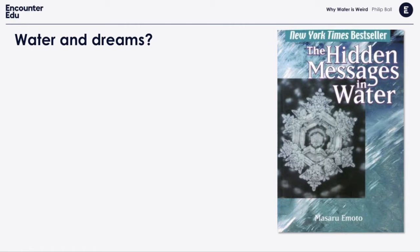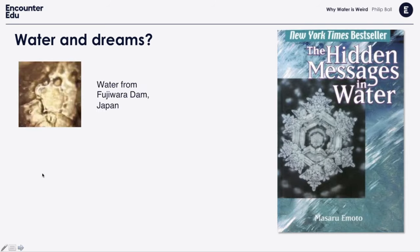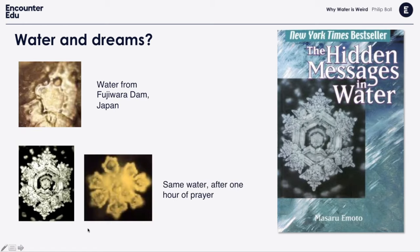It seems that water has this property of attracting weird scientific claims. It gets even weirder with Masaru Emoto. When I was writing my book on water, people would mention his work. He claimed researchers took water from a dam in Japan, froze it, and it just looked like black shapeless stuff. Then they got a Buddhist priest to pray by the side of the dam for an hour, took more water, crystallized it — and it looked like a beautiful crystal. I don't believe these claims; these look very peculiar. It's another example of the weird claims water seems to attract.